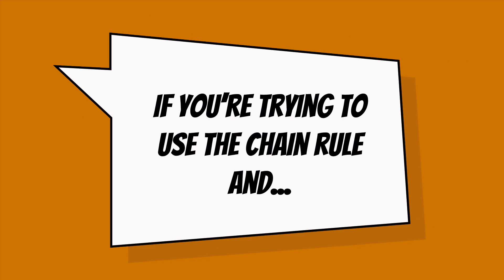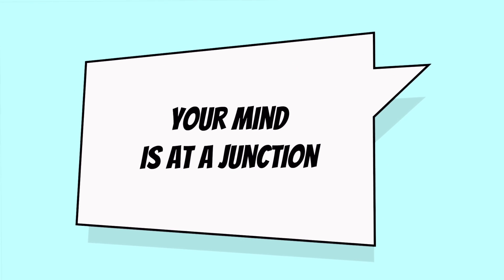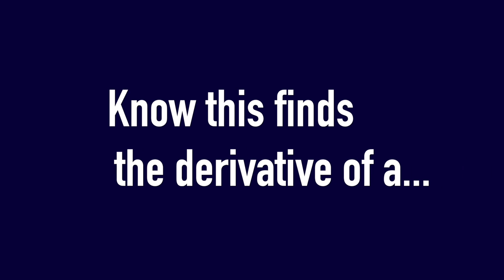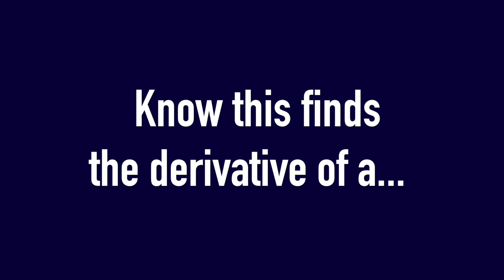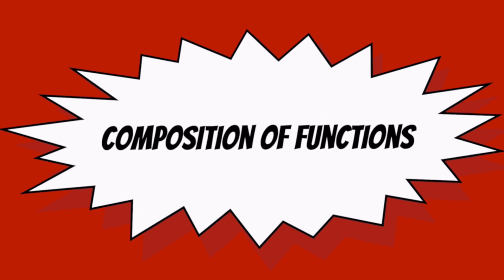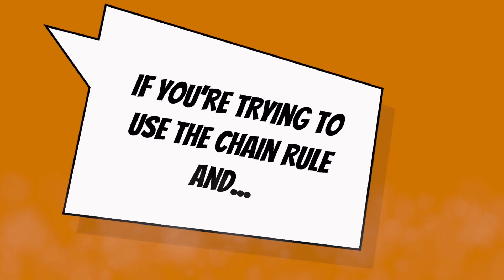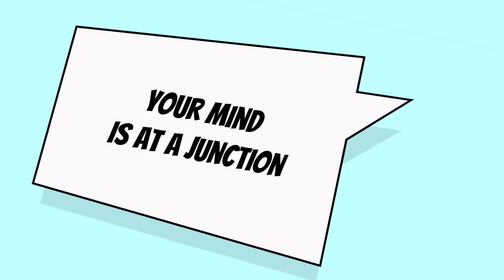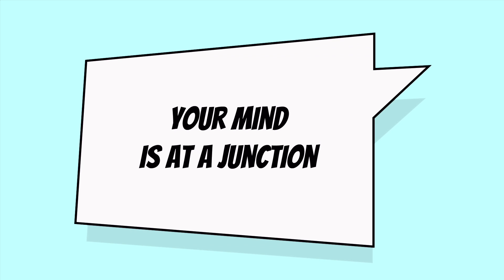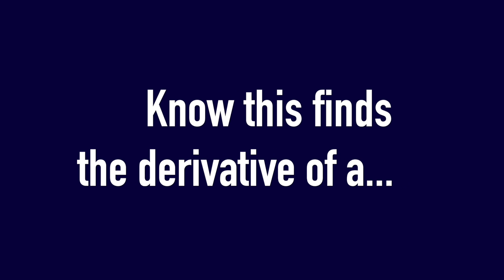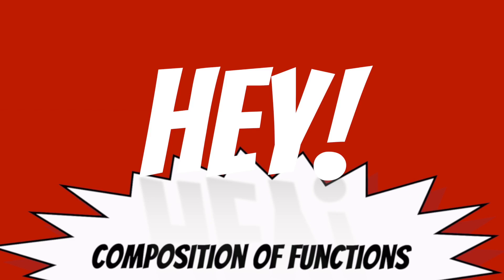If you're trying to use the chain rule then your mind is at a junction — notice it finds a derivative of a composition of functions. If you're trying to use the chain rule then your mind is at a junction, notice it finds a derivative of a composition of functions.